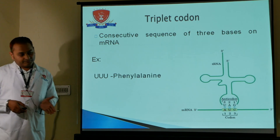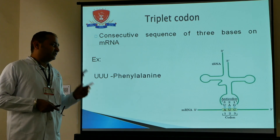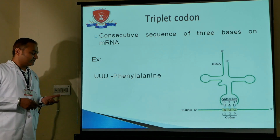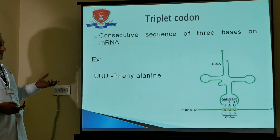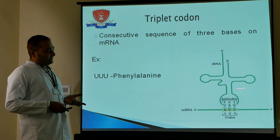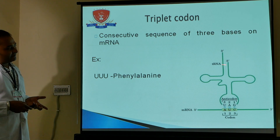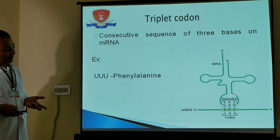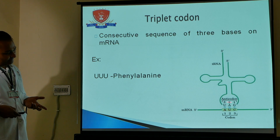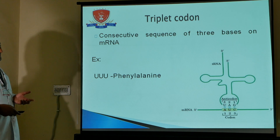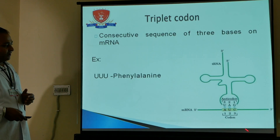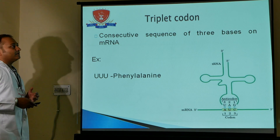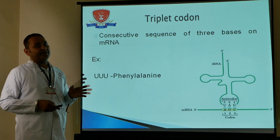For example, three-base pairs like UUA, GGU, GUC — UUA codes for phenylalanine. You can see in the diagram the transfer RNA anticodon pairing against the messenger RNA codon, according to adenine-purine and pyrimidine base-pairing rules.